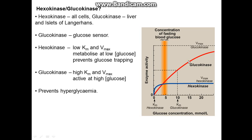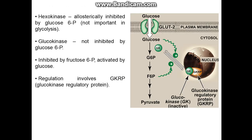Glucokinase prevents hyperglycemia; however, a mutation in glucokinase — MODY2 — can be responsible for type 2 diabetes. Hexokinase is inhibited by its product, glucose-6-phosphate, shutting down when too much product is produced. Glucokinase found in the liver is regulated differently — it's shut down by fructose-6-phosphate. Normally it's bonded with glucokinase regulatory protein (GKRP) in the nucleus; in the presence of glucose it becomes more active, and in the presence of fructose-6-phosphate it becomes less active.